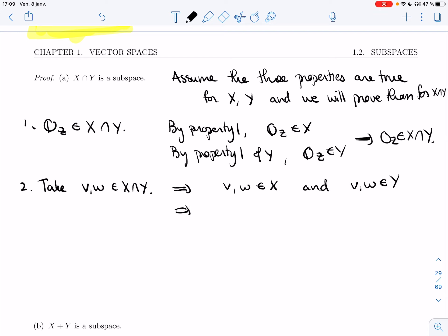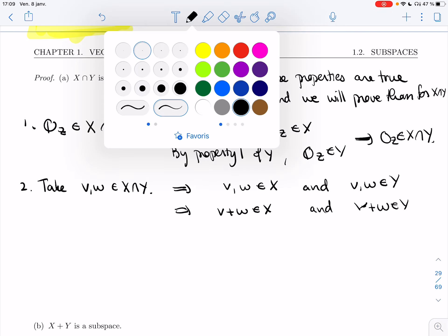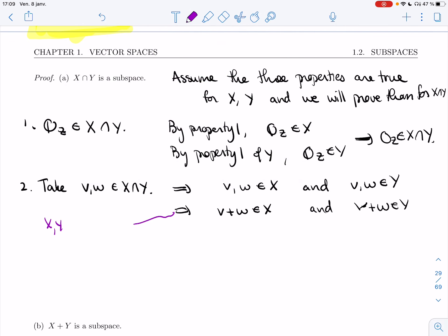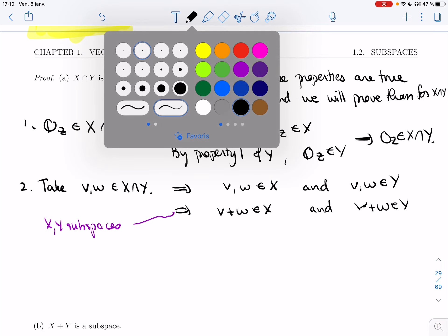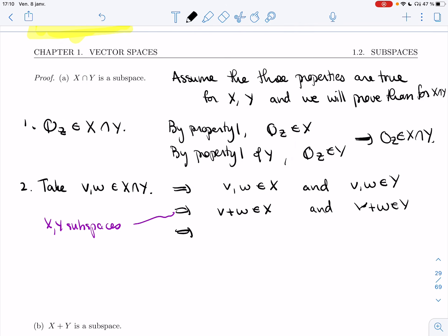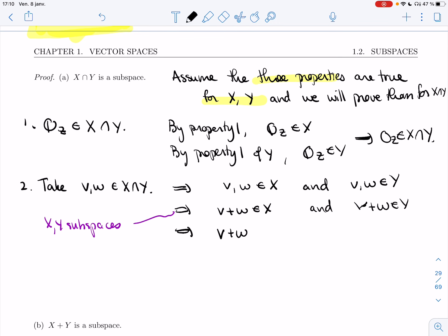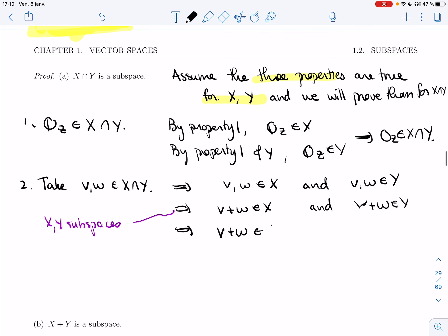But v and w are in the intersection. That means that they're in X, and they are in Y as well. But now X is a subspace, so I know I can add them. Y is a subspace, so I can add them and stay within Y. This is because X and Y are subspaces, or if you want, by property two. So v plus w is in X, and it's in Y, so it's in the intersection of X and Y.